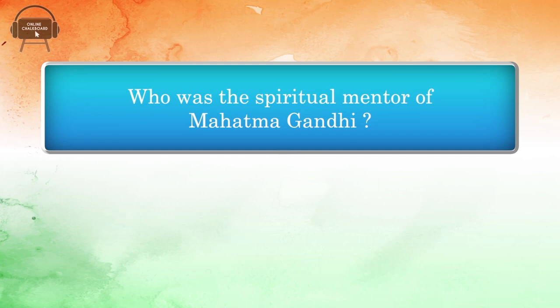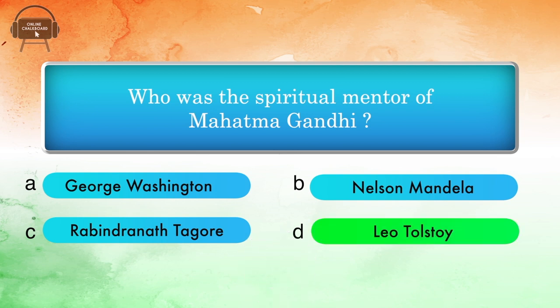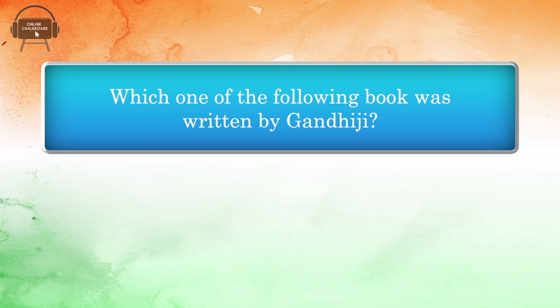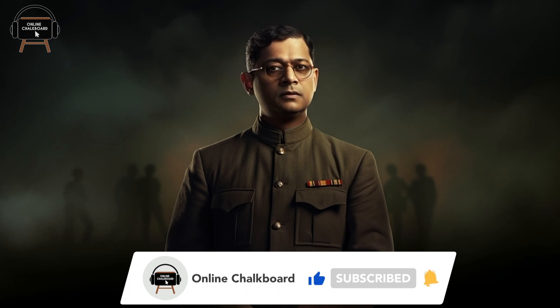Who was the spiritual mentor of Mahatma Gandhi? Options: George Washington, Nelson Mandela, Rabindranath Tagore, Leo Tolstoy. Answer: Leo Tolstoy. Which one of the following books was written by Gandhiji? Options: Indian Home Rule, The Indian Struggle, The Discovery of India, The Unity of India. Answer: Indian Home Rule. Thank you for joining us on this educational and enlightening quiz video by the online Chalkboard YouTube channel. We hope you enjoyed this journey through the life of Mahatma Gandhi. Keep learning and continue to make history. Until we meet again.